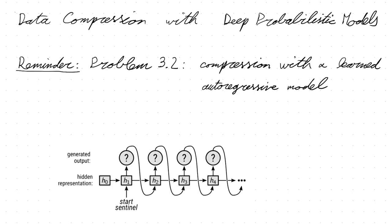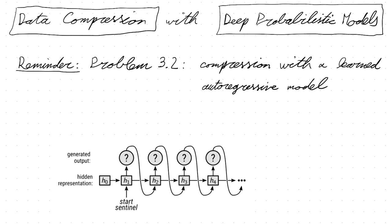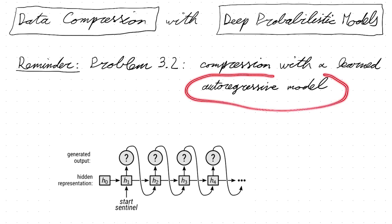The course is called data compression with probabilistic models because these two aspects really go hand in hand. In the past few videos, we've been focused mostly on the data compression side and learned several modern methods of compressing data. We've always seen that in all of these methods, we need a probabilistic model of our data source in order to compress the data. So in this video, we'll focus more on new machine learning-based methods to parameterize and learn complicated probability distributions over data.